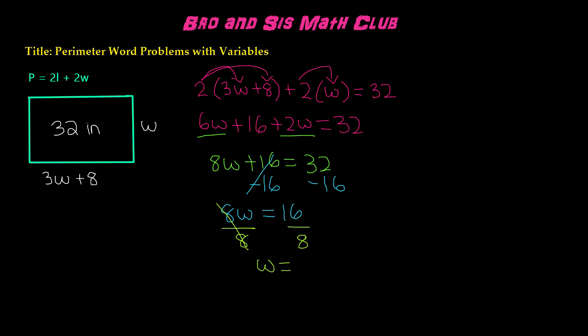We are left with w is equal to 2. That means the width is 2 inches, and if we substitute this, 3 times 2 plus 8 is equal to 14 inches.